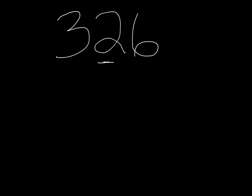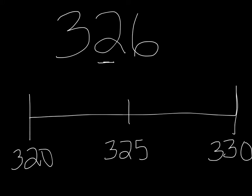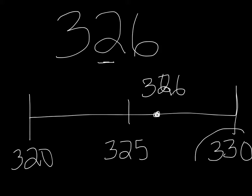We can also look at three-digit numbers, like 326. The same rules apply. We look at the tens place and we see that there's a 2 in the tens place. So the 10 that comes at the beginning of my number line is not just 20, but it's 320, and the next 10 on my number line is 330. In the middle I have 325, and where would 326 go on my number line? It would be about right here. So I can see, just by looking, that 326 is closer to 330.